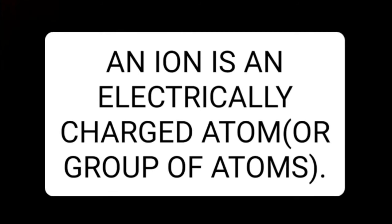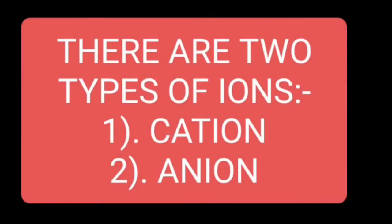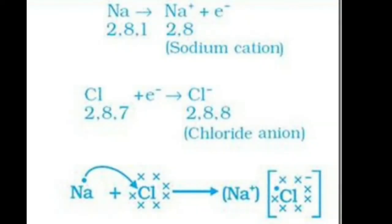Today's topic is ions. What is an ion? An ion is an electrically charged atom. For example, sodium ion and magnesium, chlorine ion. These ions can be positive and negative. Sodium atom loses one electron and attains a positive charge, while chlorine gains one electron and becomes an anion, which is negatively charged.